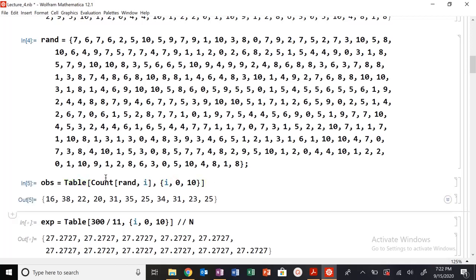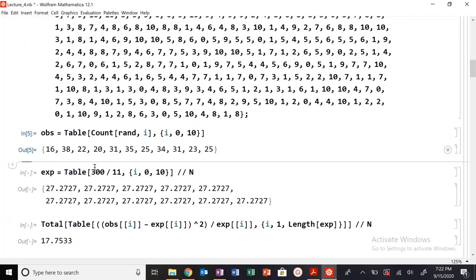I see right here, I get 16 times, 38 times, 22 times, 20, et cetera. My expected value would just be, again, 300 should be divided by 11 and evenly distributed here.